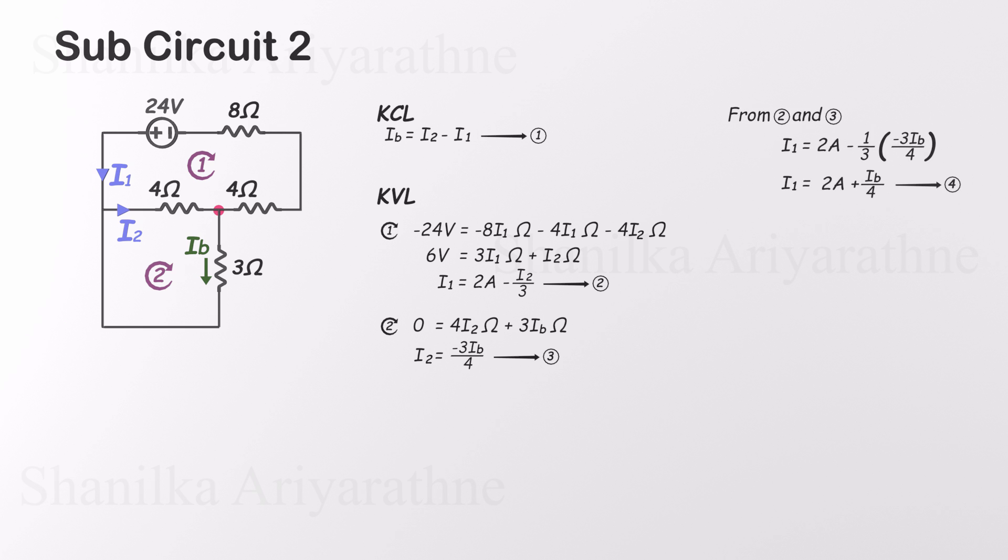First, substitute equation 3 into equation 2. That gives us I1 in terms of IB. Then plug the expressions for I1 and I2 back into equation 1. After simplifying, we solve for IB and find that IB equals negative 1 amp. Don't worry about the negative sign. It just means the current is flowing in the opposite direction from the one we assumed. That's perfectly normal in circuit analysis.